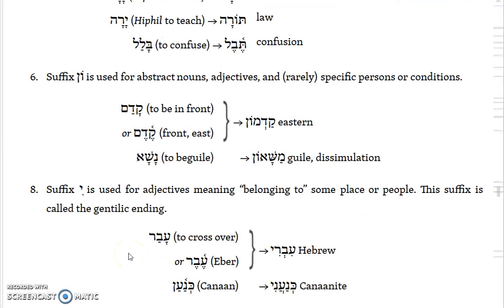Some suffixes have an -on ending, used for abstract nouns, adjectives, and rarely specific persons or conditions. So you have kadam, which means 'to be in front,' but then kadmon, meaning 'eastern' — you orient yourself towards the east, so in front of you is to the east. And then you have nasha, 'to beguile,' but then mashaon, meaning 'guile' — adding the -on ending as well as a prefix mem to that root.